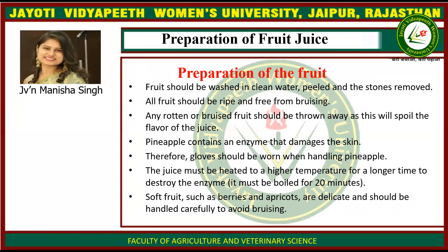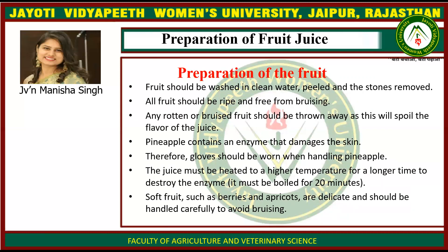Preparation of the fruit: fruit should be washed in clean water, peeled, and the stones removed. All fruit should be ripe and free from bruising. Any rotten or bruised fruit should be thrown away as this will spoil the flavor of the juice. Pineapple contains an enzyme that damages the skin, so gloves should be worn when handling pineapple. The juice must be heated to a higher temperature for a longer time to destroy the enzyme — it must be boiled for 20 minutes. Soft fruits such as berries and apricots are delicate and should be handled carefully to avoid bruising.